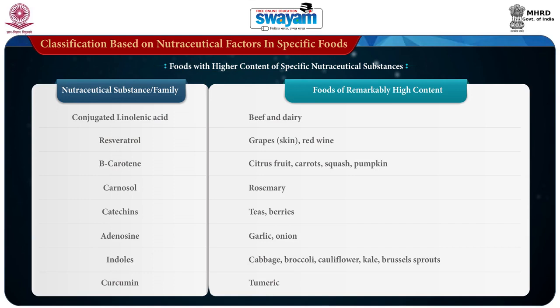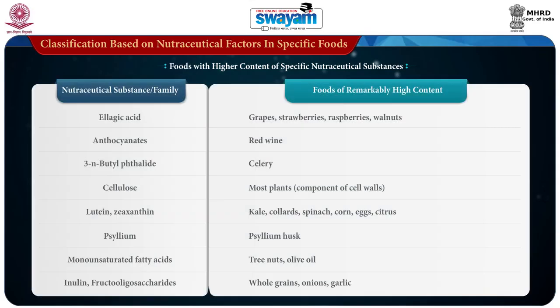Conjugated linoleic acid is present in higher amounts in beef and dairy, whereas resveratrol is present in grapes, skin and red wine. Beta-carotene is present in higher amounts in citrus fruits, carrots, squash and pumpkin, whereas rosemary contains higher amounts of carnosol. Teas and berries contain more catechins, whereas adenosine is present in garlic and onion. Indole is present in cabbage, broccoli, cauliflower, kale and Brussels sprouts. Turmeric is a good source of curcumin, and grapes, strawberries, raspberries and walnuts are good sources of ellagic acid. Red wine is a good source of anthocyanidins, whereas 3-n-butyl phthalide is present in celery.